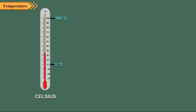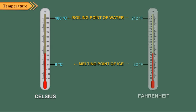The Celsius scale, also known as the centigrade scale, is marked from 0 degree Celsius to 100 degrees Celsius. 0 degree Celsius shows the melting point of ice and 100 degrees Celsius shows the boiling point of water. Here the range is divided into 100 equal parts. On the Fahrenheit scale, the range is divided into 180 equal parts.